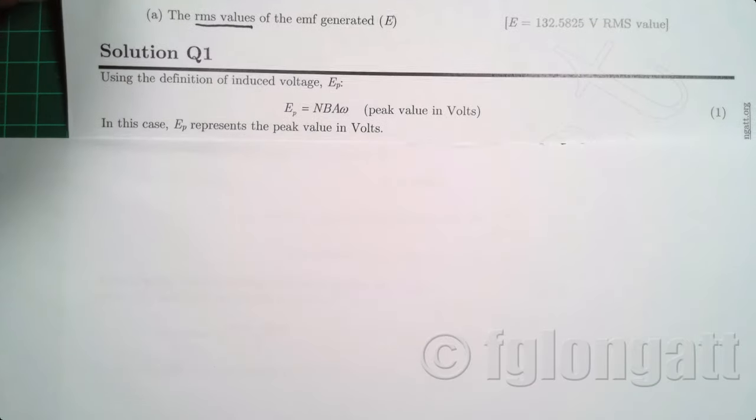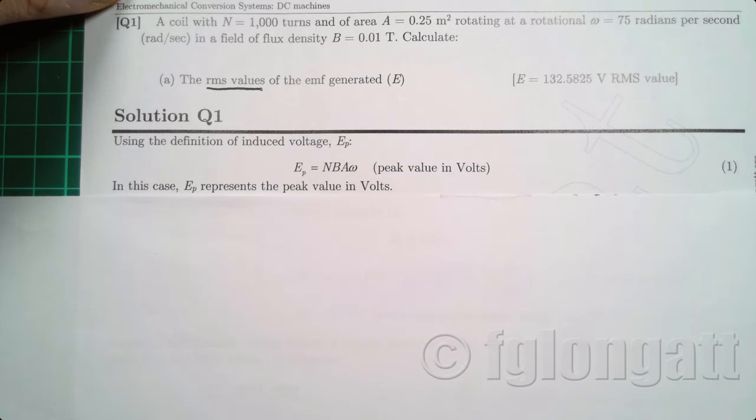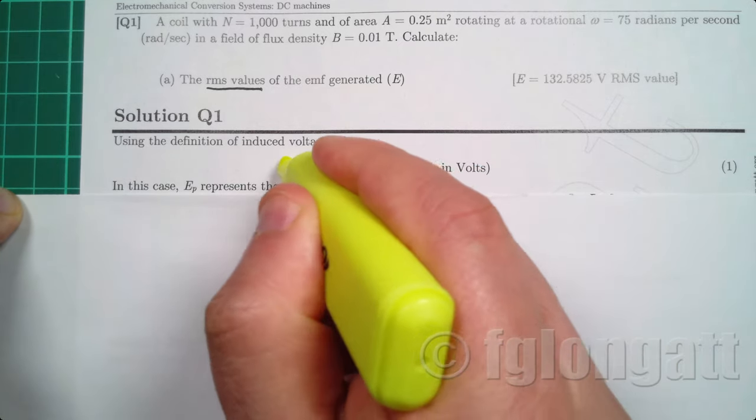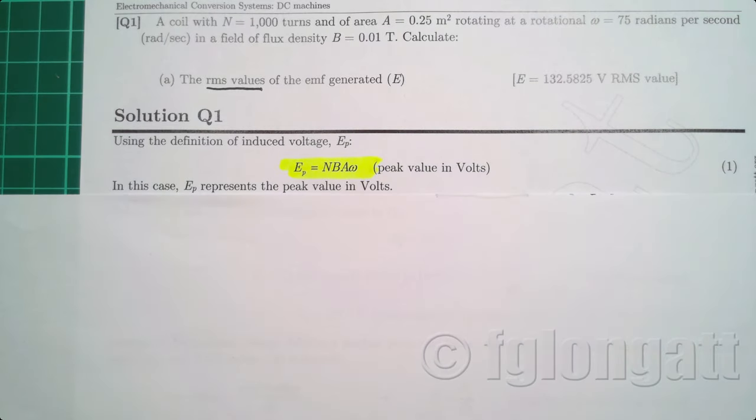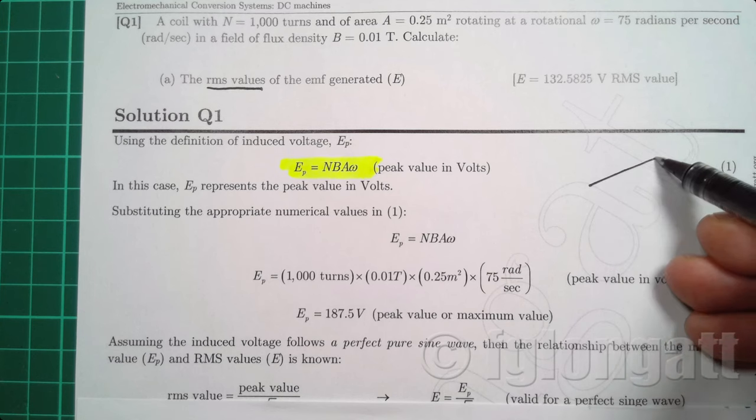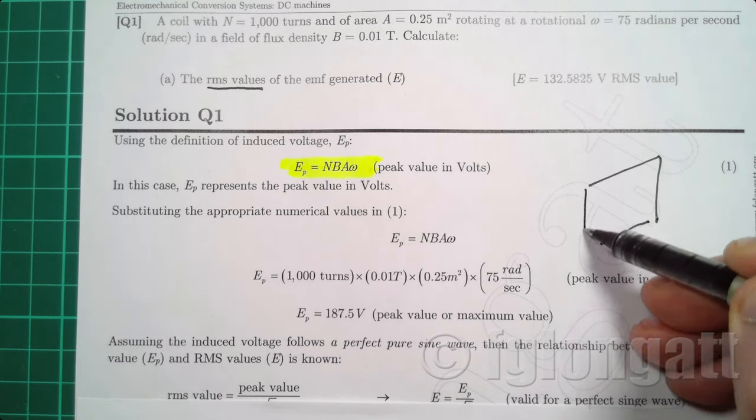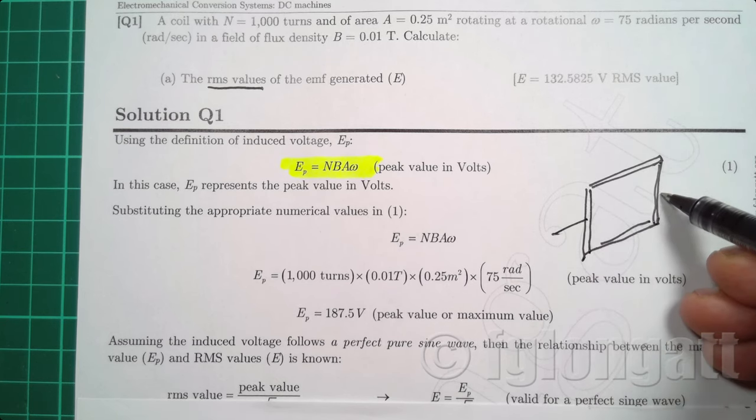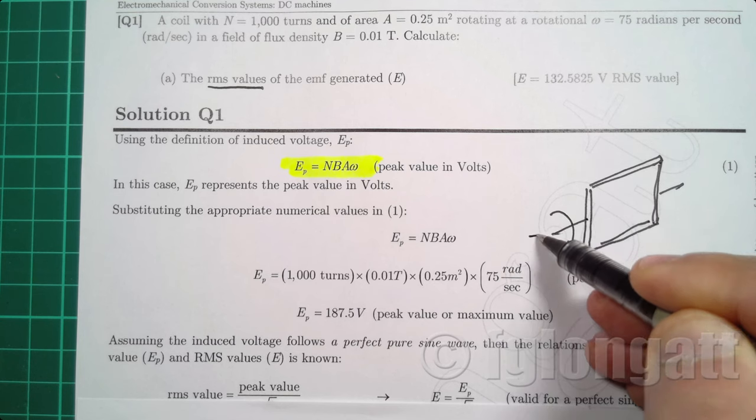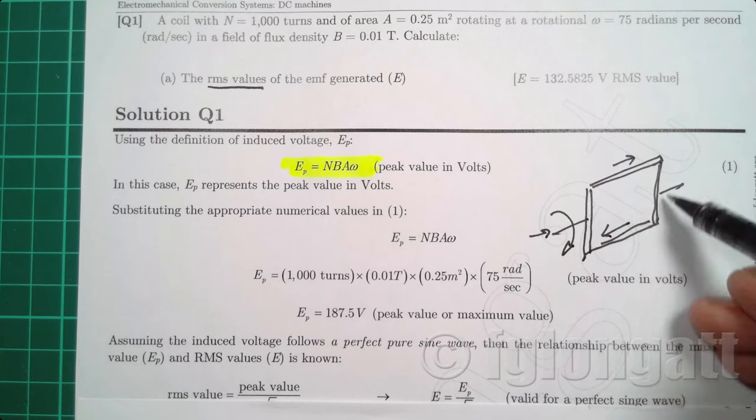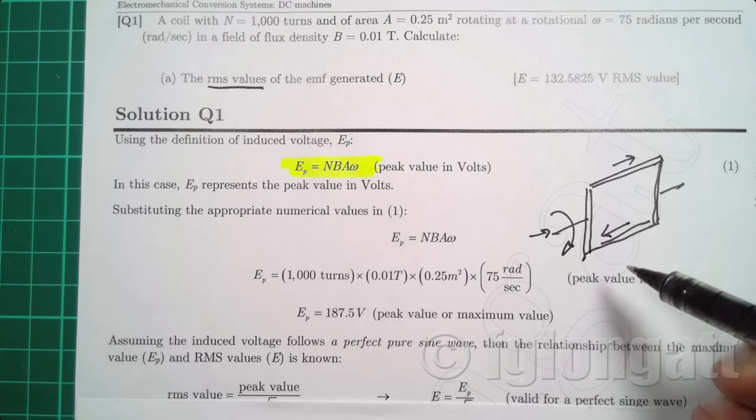So the first step in the solution is that you must remember this very important equation. This equation is basically telling you that if we have a coil, let's say that coil is basically square, and this coil is inside a magnetic field and is rotating and there are some current going in this coil. So when this rotates, you will have some induced voltage.